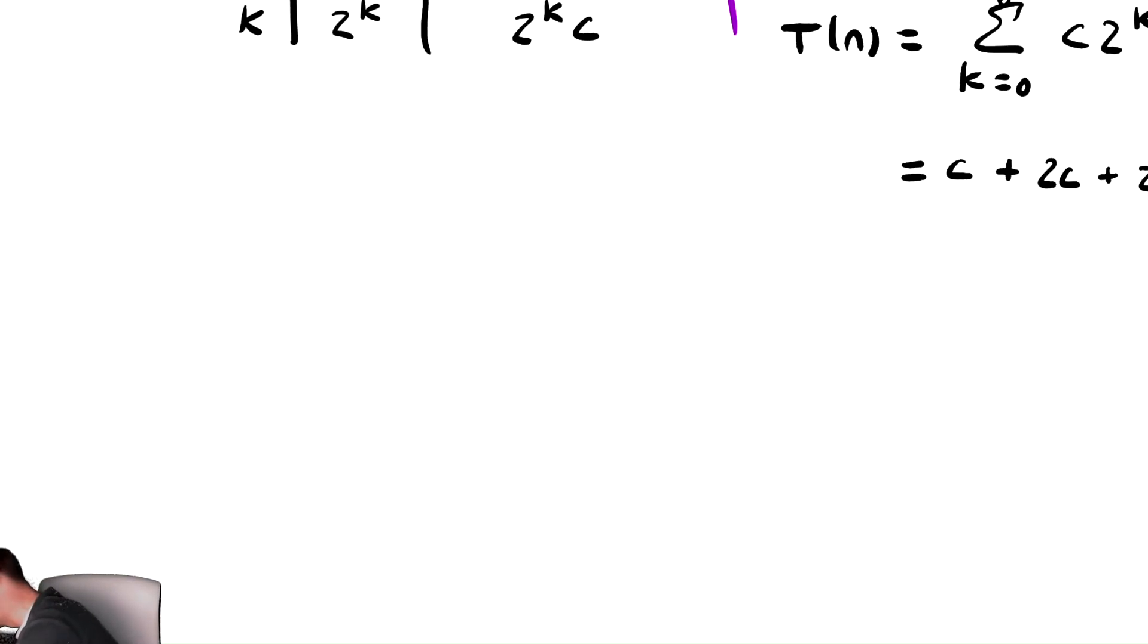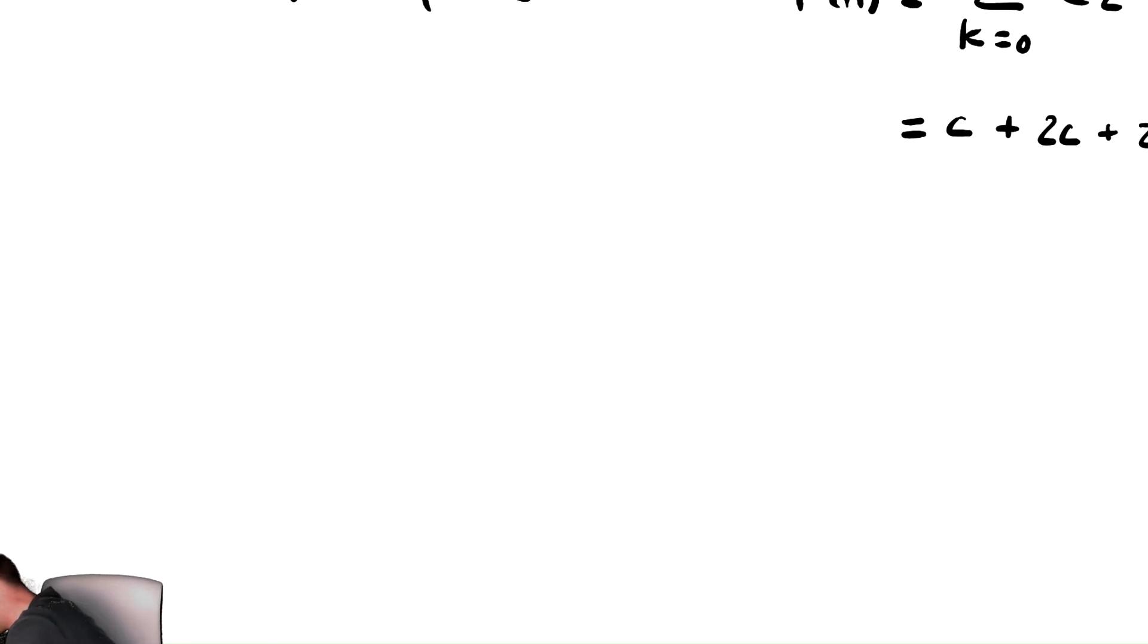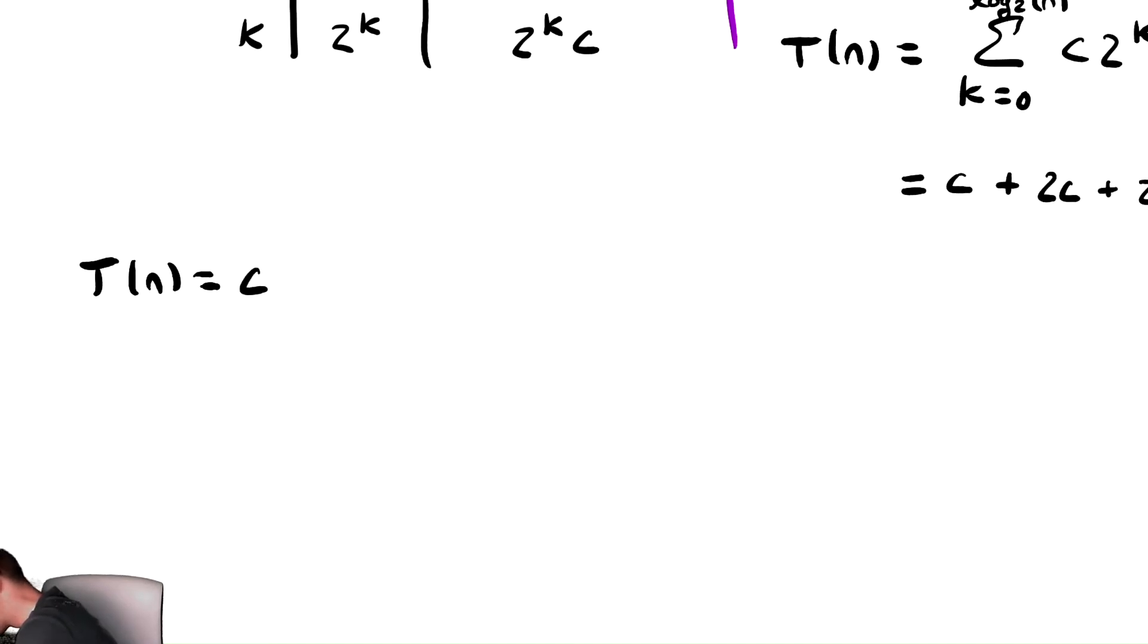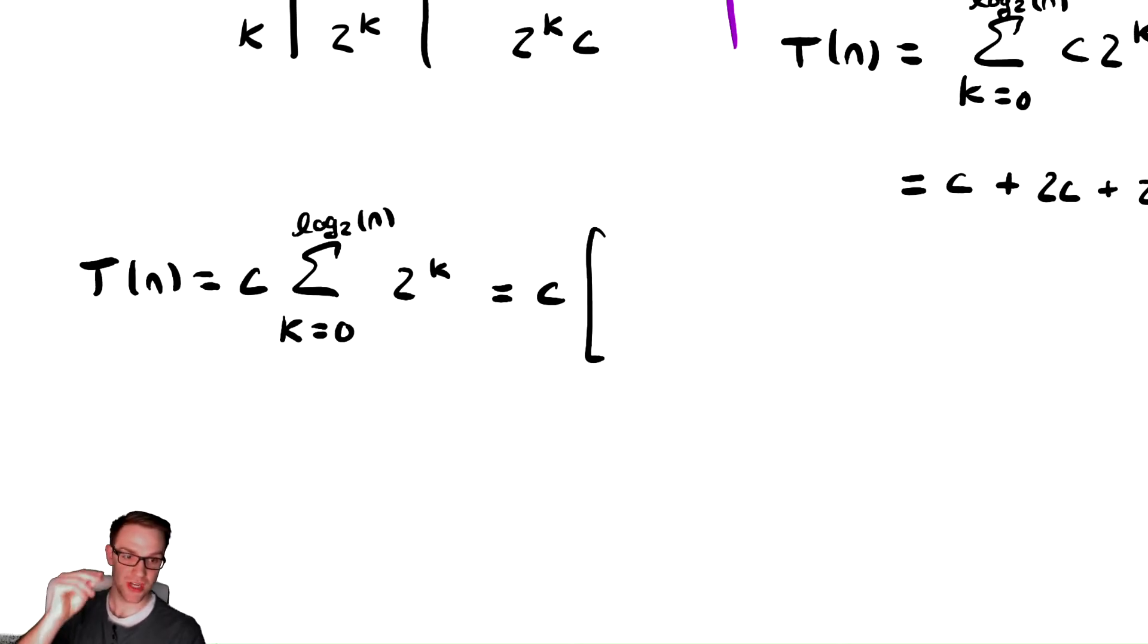So, how do we analyze that summation? Well, we have t of n is equal to, that is a geometric sum, we're going to factor out the constant, and then k goes from 0 to log base 2 of n of 2 to the k.